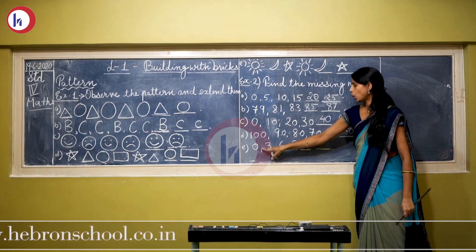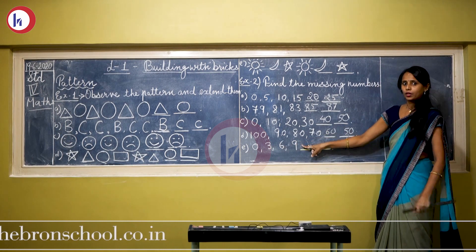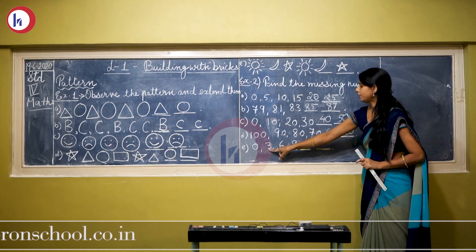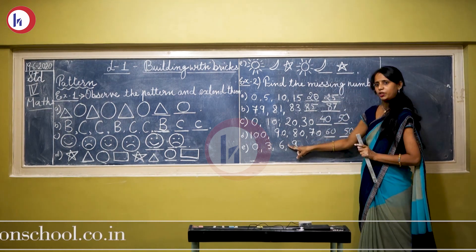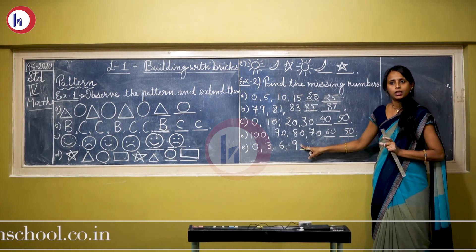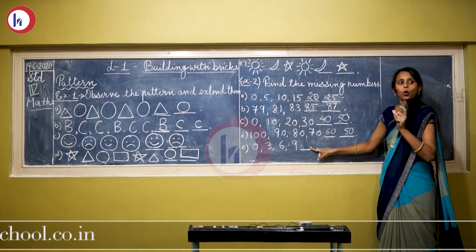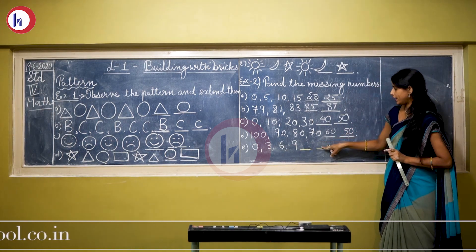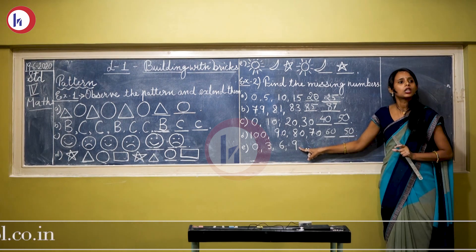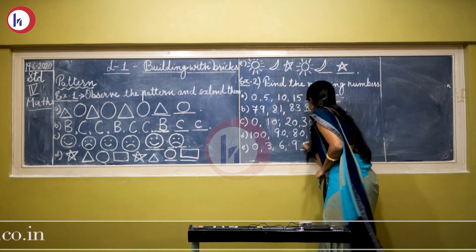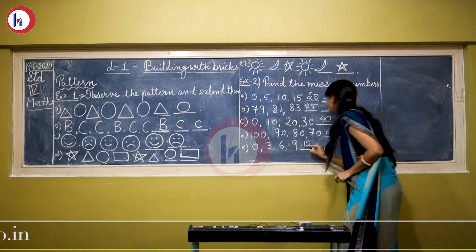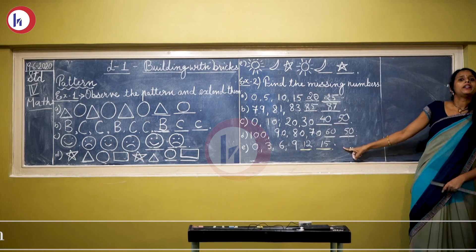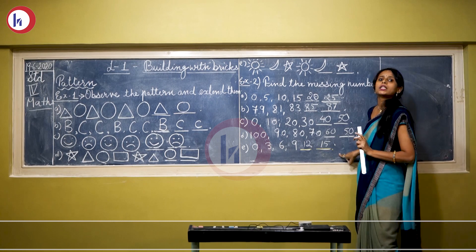Now come to the last question: 0, 3, 6, 9. From 0 to 3 is a difference of 3, again 3 to 6 is a difference of 3, and 6 to 9 is a difference of 3. This pattern has a difference of only 3. We continue by adding 3: 9 plus 3 equals 12, then 12 plus 3 equals 15. In this way, we can continue and complete this sequence.